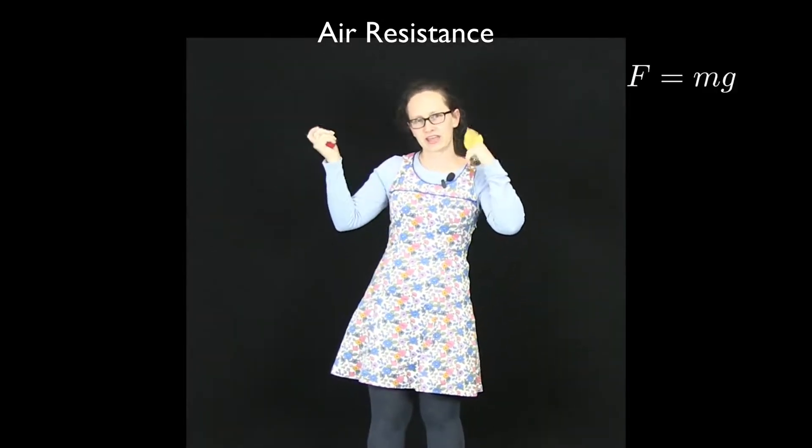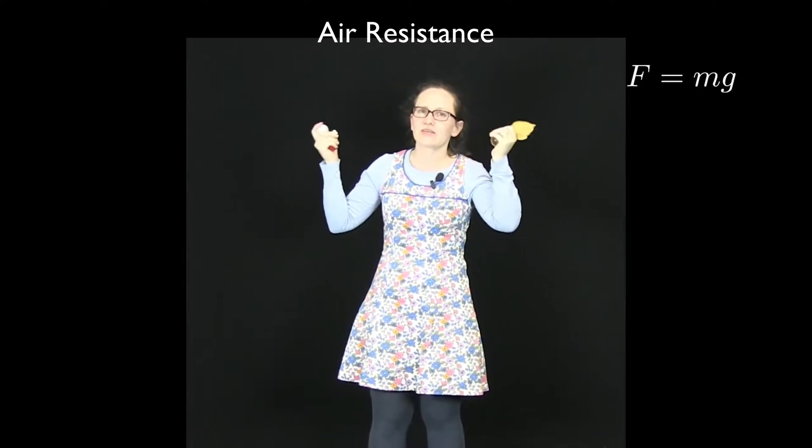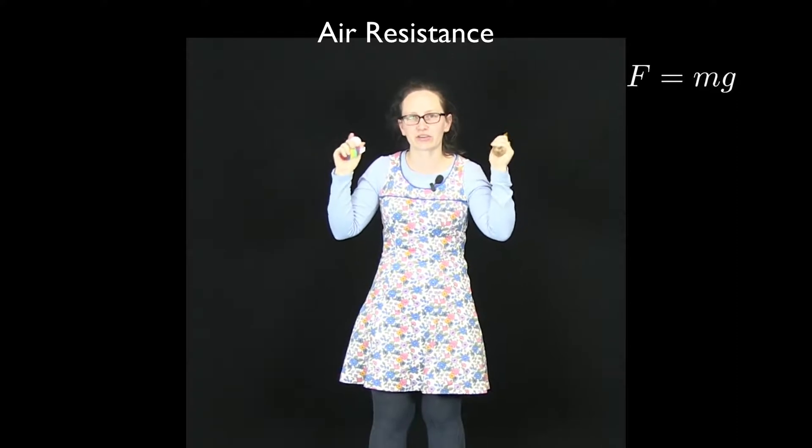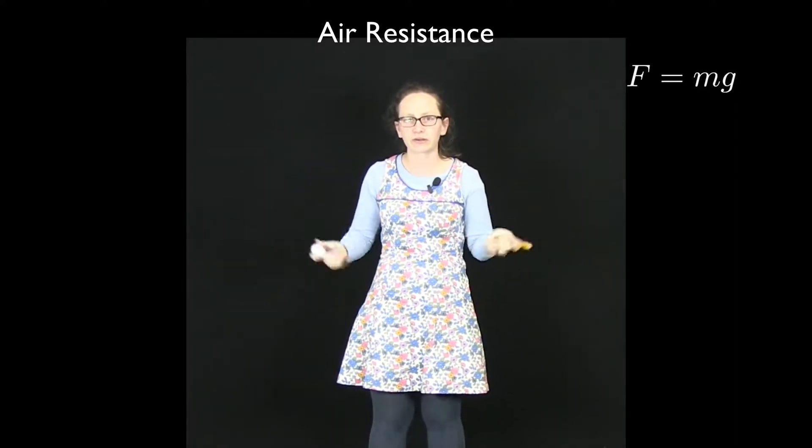We've said that F equals mg and little g is fixed on the surface of the Earth, which is saying that all objects should accelerate at the same rate on the surface of the Earth. So they should all fall together if we let go.